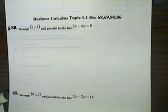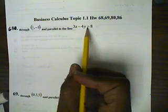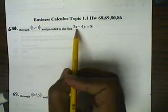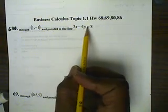This is Calculus, Topic 1.1, Homework Section Problems 68, 69, 80, and 86. We want a line that's going to go through the points one-third and negative one, and it has to be parallel to 3x minus 4y equals 8. Being parallel simply means that it will have the same slope. So to find the slope of this, we're going to solve for y.